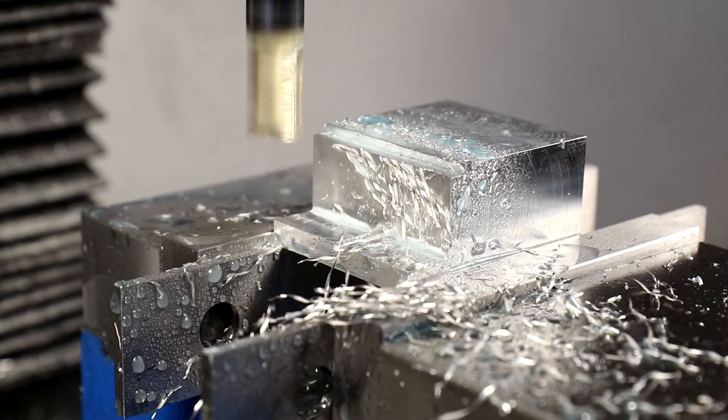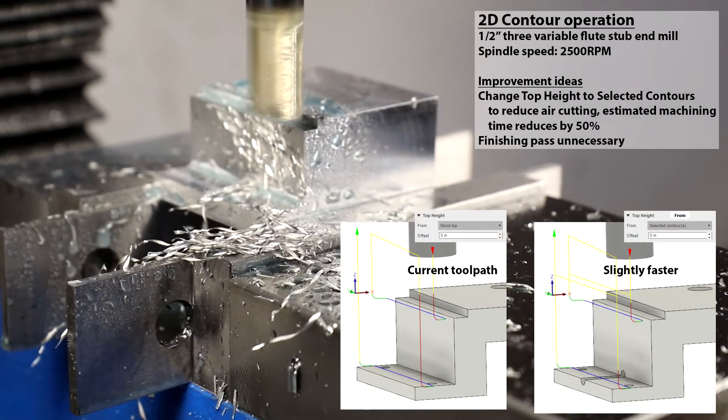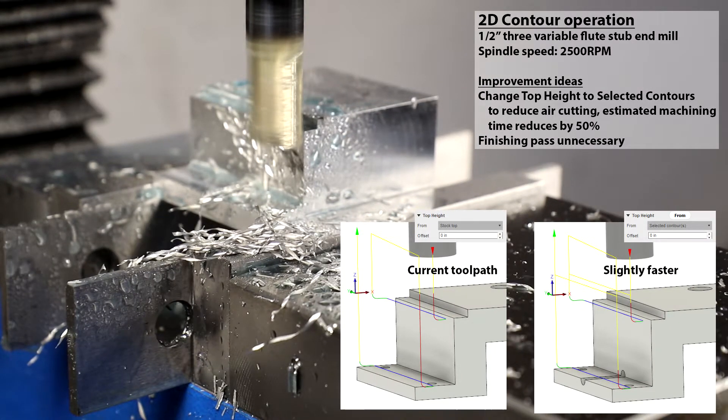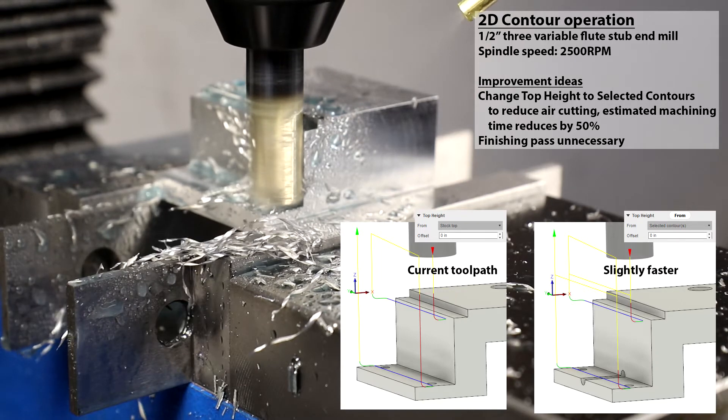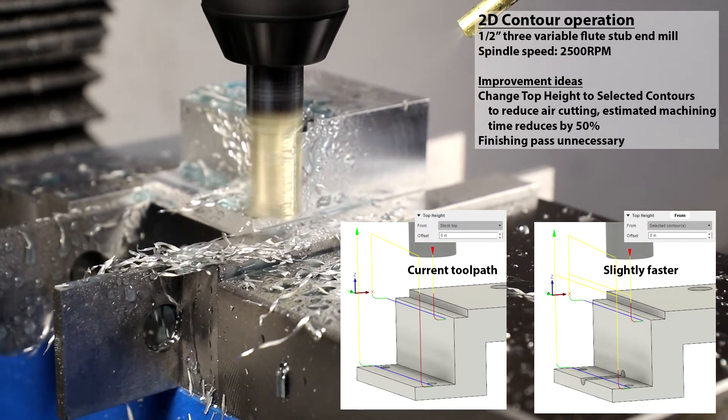One of the easiest improvements that one can make in Fusion 360 to improve milling time is careful selection of your heights. Careful to not crash, but also careful to not cut air.